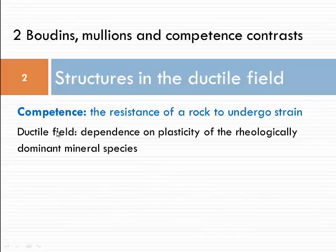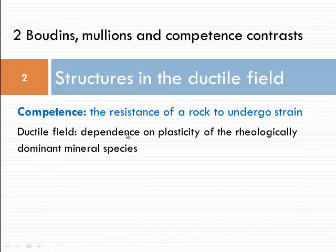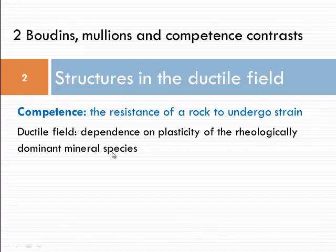What is competence? Competence in general is the resistance of a rock to undergo strain. We are going to talk about essentially the ductile field and the brittle-ductile transition. In the ductile field, the competence of a rock depends on the plasticity of the most abundant, or rheologically dominant, mineral species in a rock. For instance, a rock dominated by quartz, something like a granitic gneiss, would behave differently compared to a gabbro, where the rheologically dominant mineral species might be plagioclase, simply because the plasticity of quartz and feldspar are different.